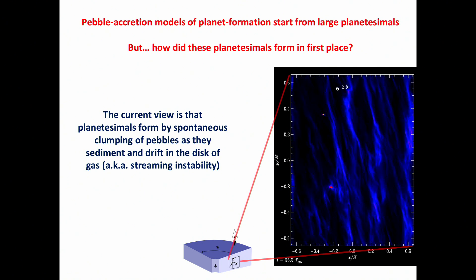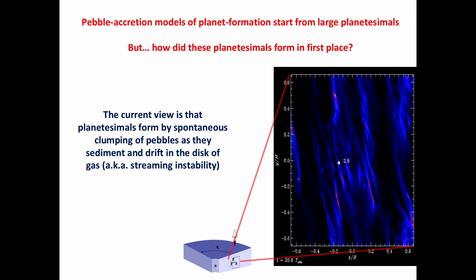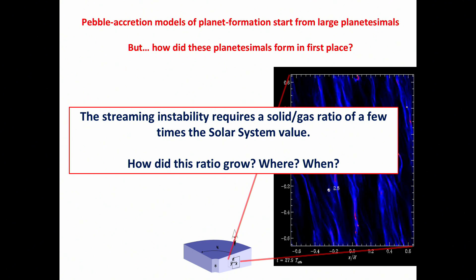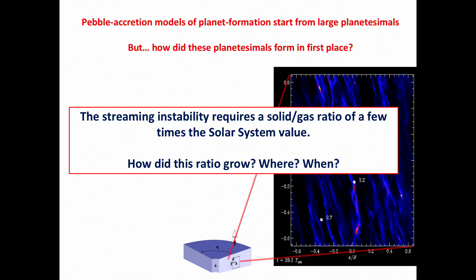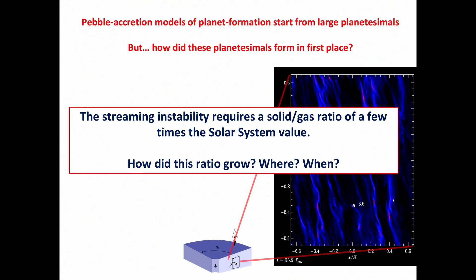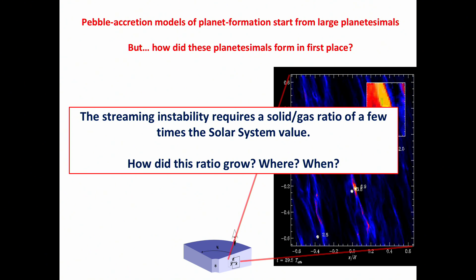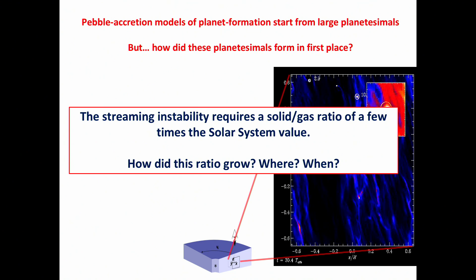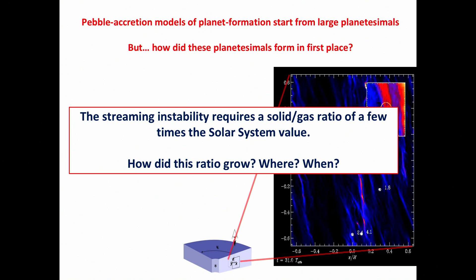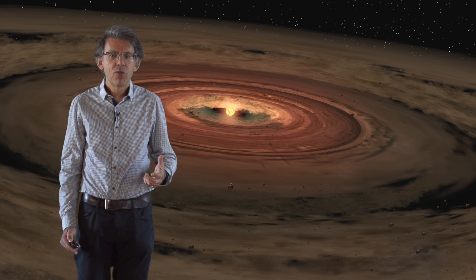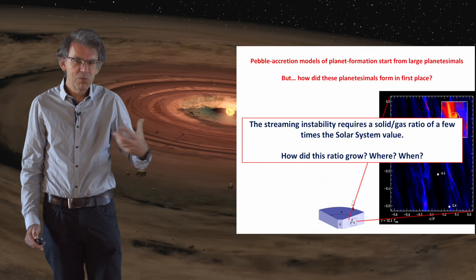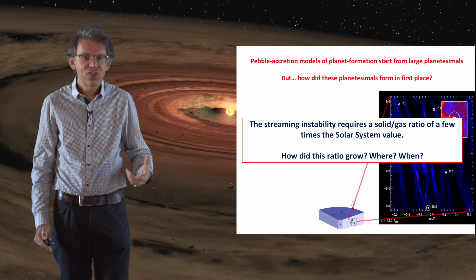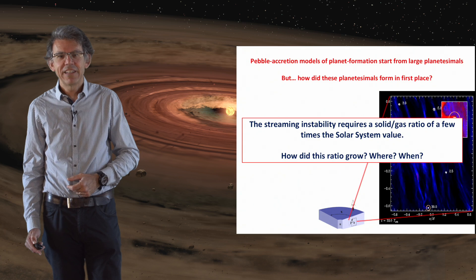However, simulations show that for the streaming instability to be effective, the initial mass ratio between the solids and the gas in the disk has to be a few times the value that characterized the initial protoplanetary disk around the Sun. The question that remains open is how did this ratio grow, and did it happen uniformly, or specifically at certain locations? This is very important because the first planetesimals are those which grow to become protoplanets, so we cannot have an effective theory of planet formation without understanding planetesimal formation.